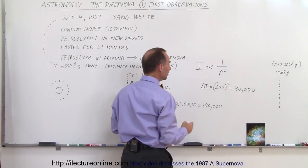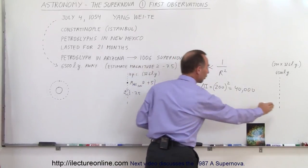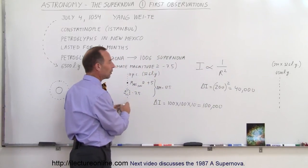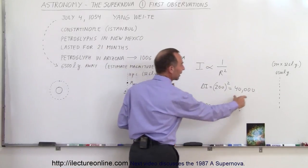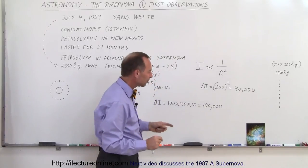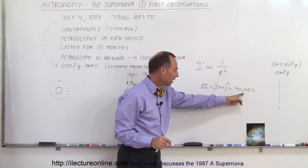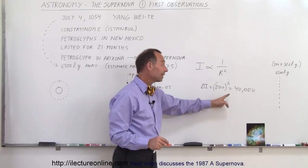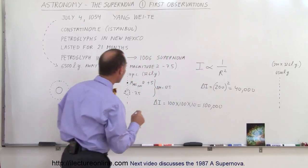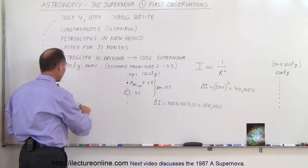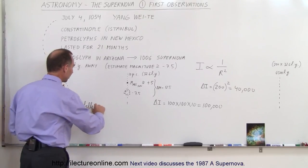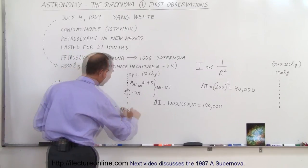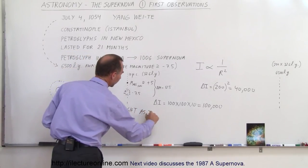Now, that means it's even 40,000 times brighter over here because it's that far away compared to if it happened over here. So now we multiply 100,000 times 40,000, and what do we get? Well, 100,000 times 1,000 is 100 million, times 10,000 is 1 billion, times 40,000 is 4 billion. So it was estimated to be about 4 billion times as bright as the Sun.